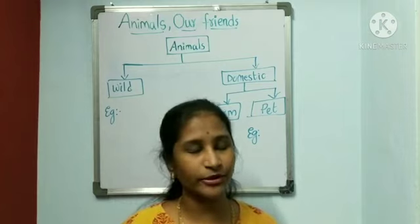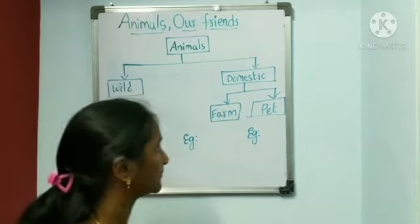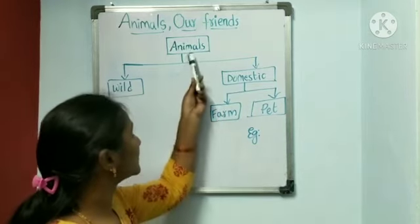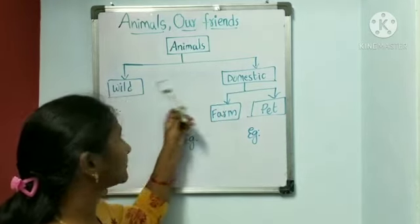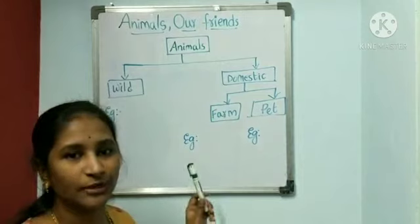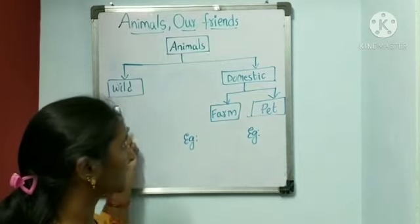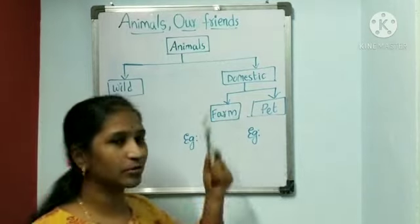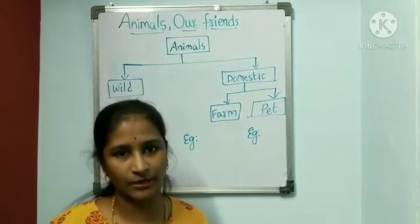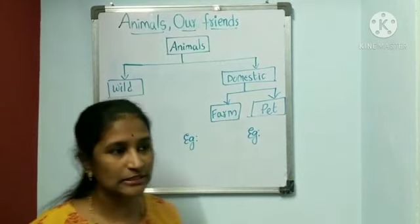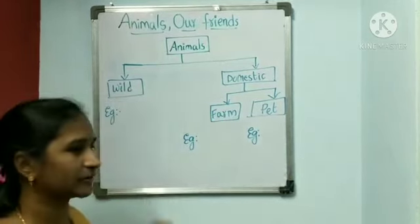Now let us go into the lesson. Animals are divided into two types: one is wild animals and the other one is domestic animals. Now let us learn about wild animals.